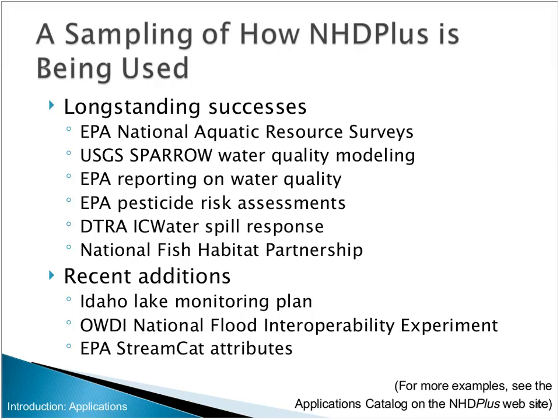This next one is exciting — something on a scale we've never contemplated before. OWDI, the Open Water Data Initiative: the National Flood Interoperability Experiment involved taking the NHDPlus framework and running it through a supercomputer to generate flow estimates in support of flood forecasting. We're still getting our heads around coming from desktop to that scale and are really excited about the National Weather Service using it for flood forecasting. Finally, our Office of Research and Development in Corvallis, Oregon has produced an extensive library of landscape metrics associated with catchments that provide a rich collection of supplemental information — and that's available now.